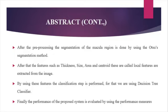After that, features such as thickness, size, area, and centroid — which are called local features — are extracted from the image. By using these features, the classification step is performed. Here we use the decision tree classifier for classification.